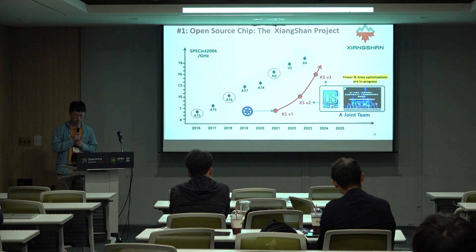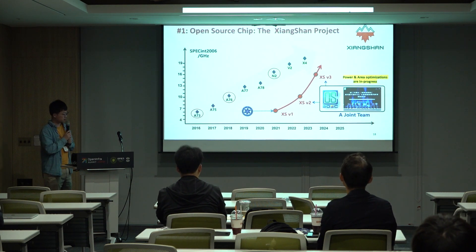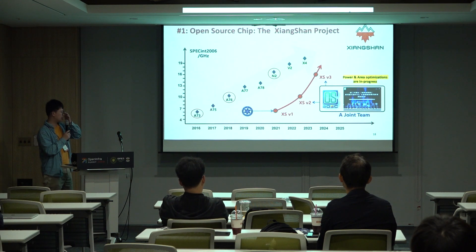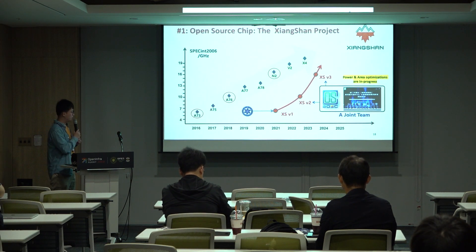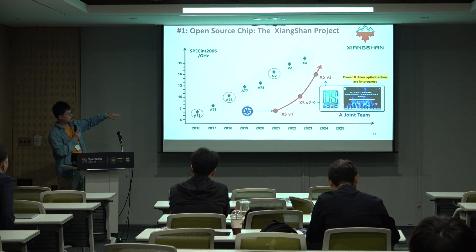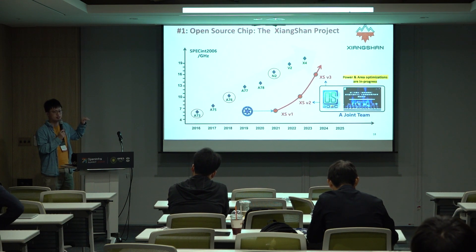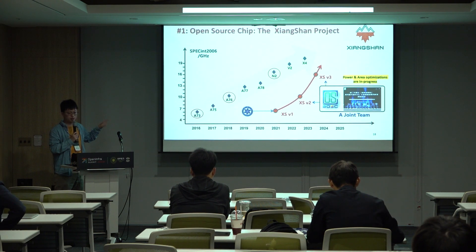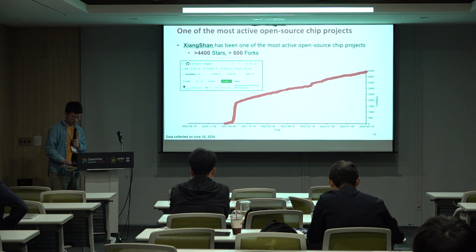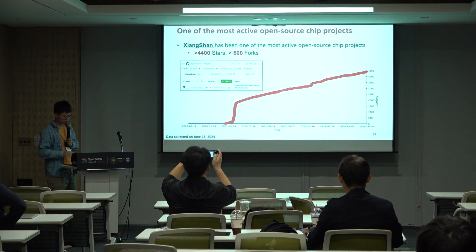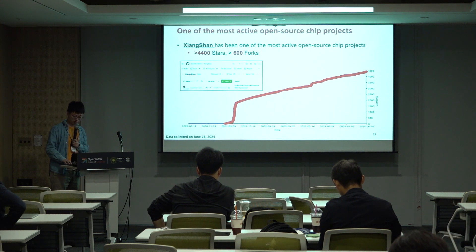The first open source chip project is called Xiangshan. It has developed three generations since 2020. The first generation in 2021 is about the same performance as ARM Cortex-A76. The second generation in 2022 is also compared with ARM Cortex-A76. The third generation has just been released last month, with performance against ARM Neoverse N2. Xiangshan is an open source project on GitHub and has been one of the most active open source chip projects — you can easily get its source code.